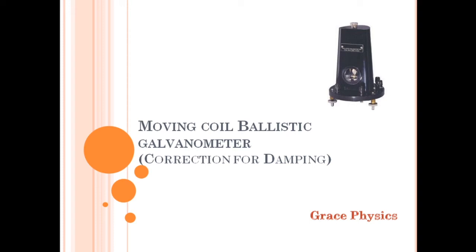Hello friends. In the next session, we have a moving coil galvanometer construction. We have a charge expression: Q is equal to T by 2π into C by nab into theta. We have a new relation: Q is proportional to theta, and Q is equal to k·theta. We call it the ballistic galvanometer protection factor.